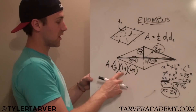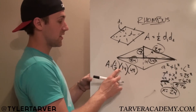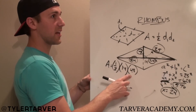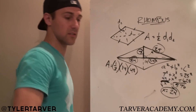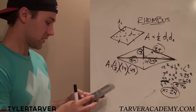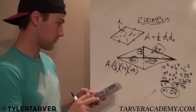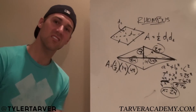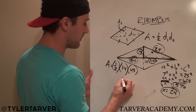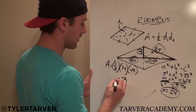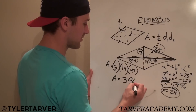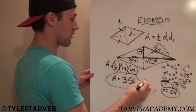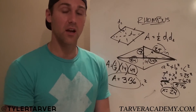So: one-half times 14 is 7, and then 7 times 48 — let me check that — is 336. Area equals 336 inches squared. And that's how you find the area of a rhombus.